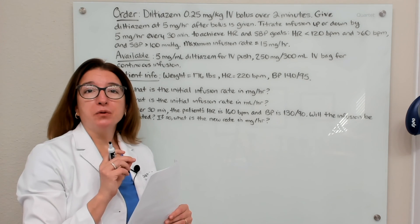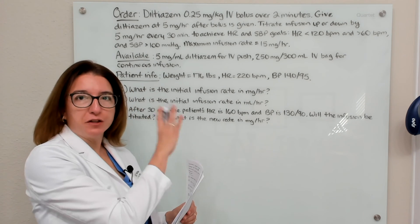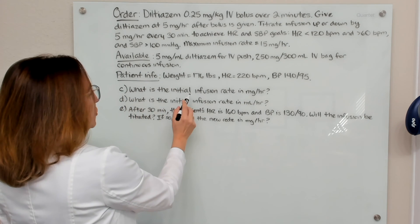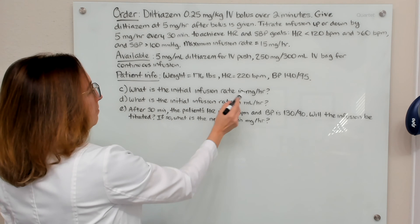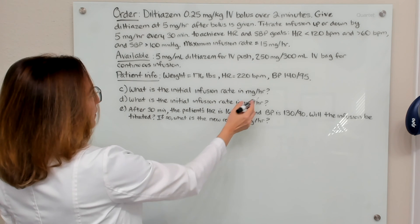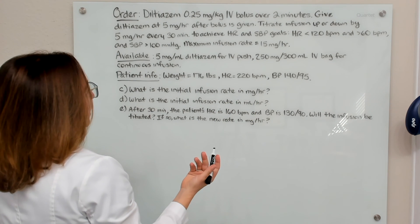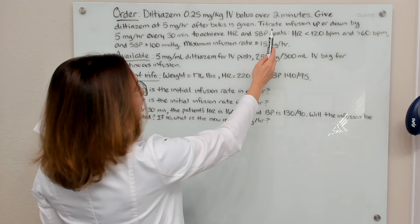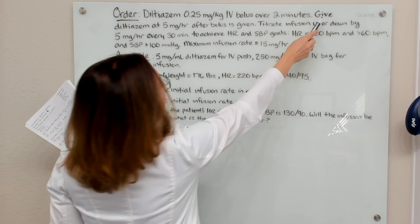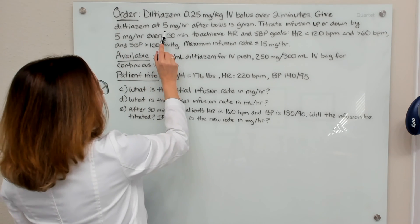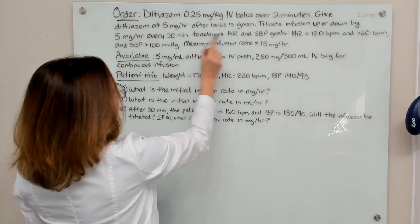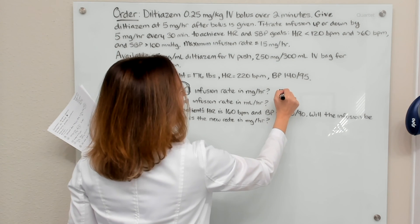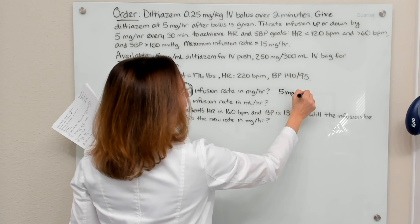Part C asks what is the initial infusion rate in milligrams per hour. We can actually get that directly from the order, which states to give diltiazem at 5 milligrams per hour after the bolus is given. So the answer to Part C is 5 milligrams per hour.